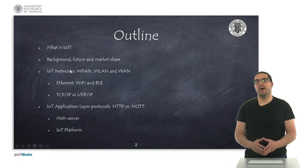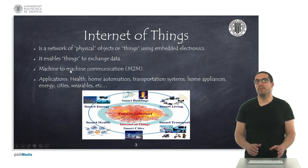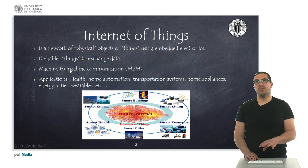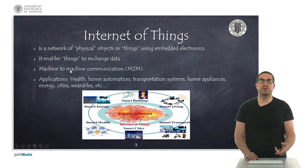It's not really intended to provide a full depth explanation about all the possibilities of IoT. IoT is a network of physical objects or things that use embedded electronics. They exchange data between them, so it's a way to interconnect these devices. In general, we use them for machine-to-machine communication, and they are used in applications like health, home automation, transportation, wearables, smart cities, and so on.